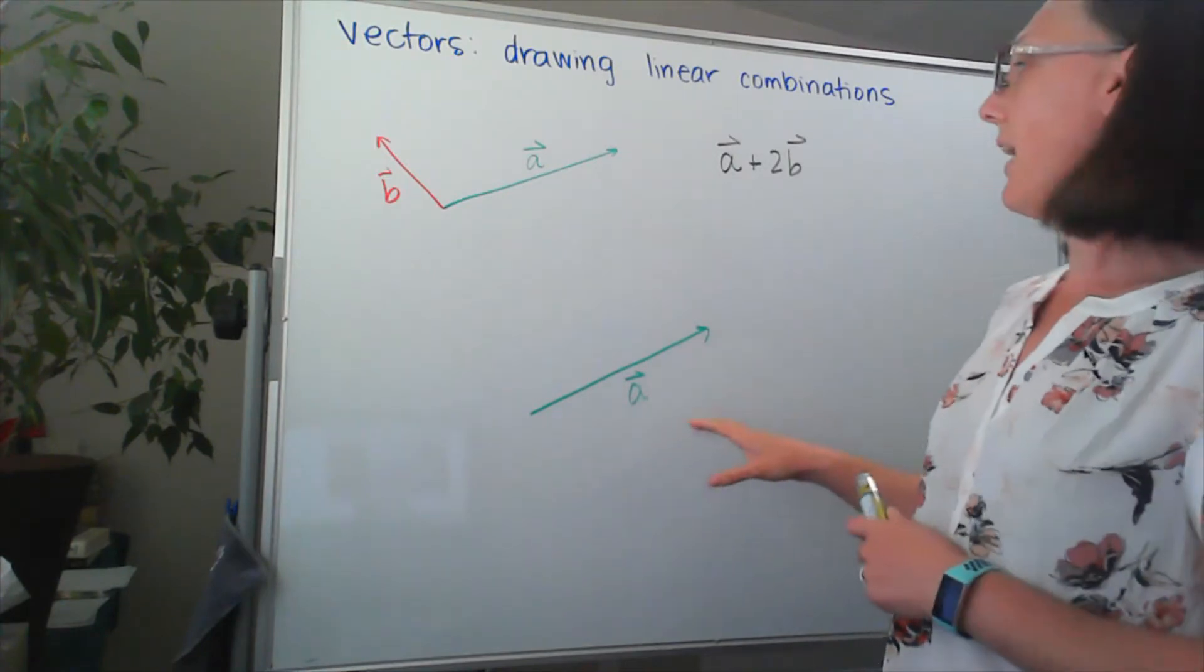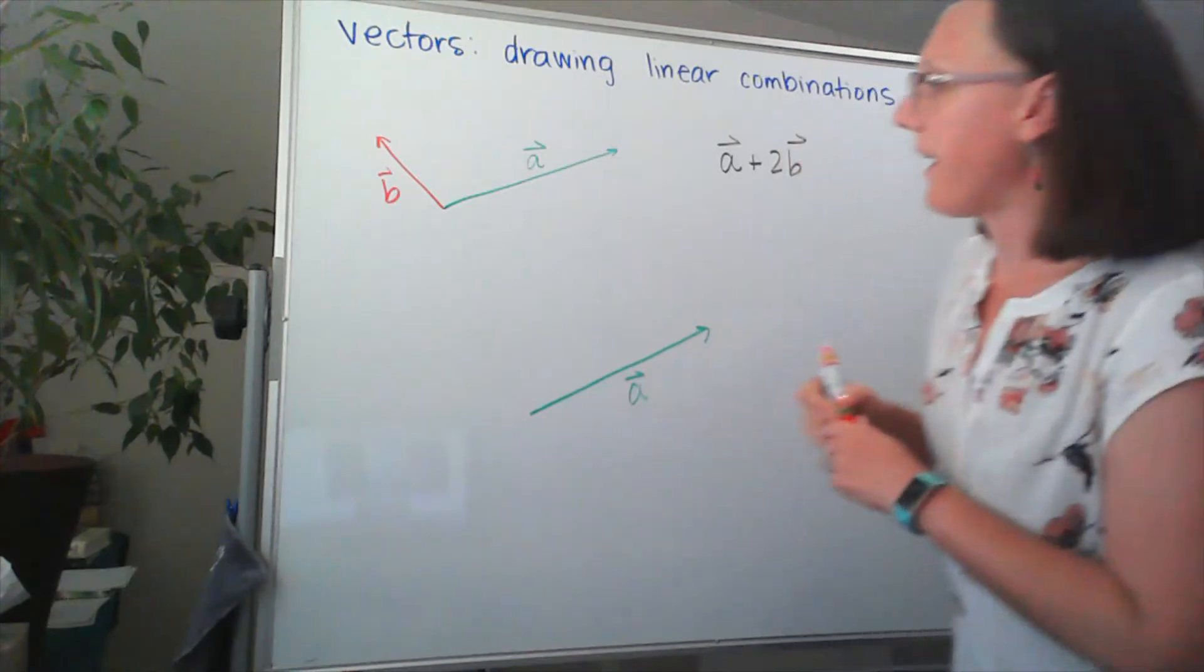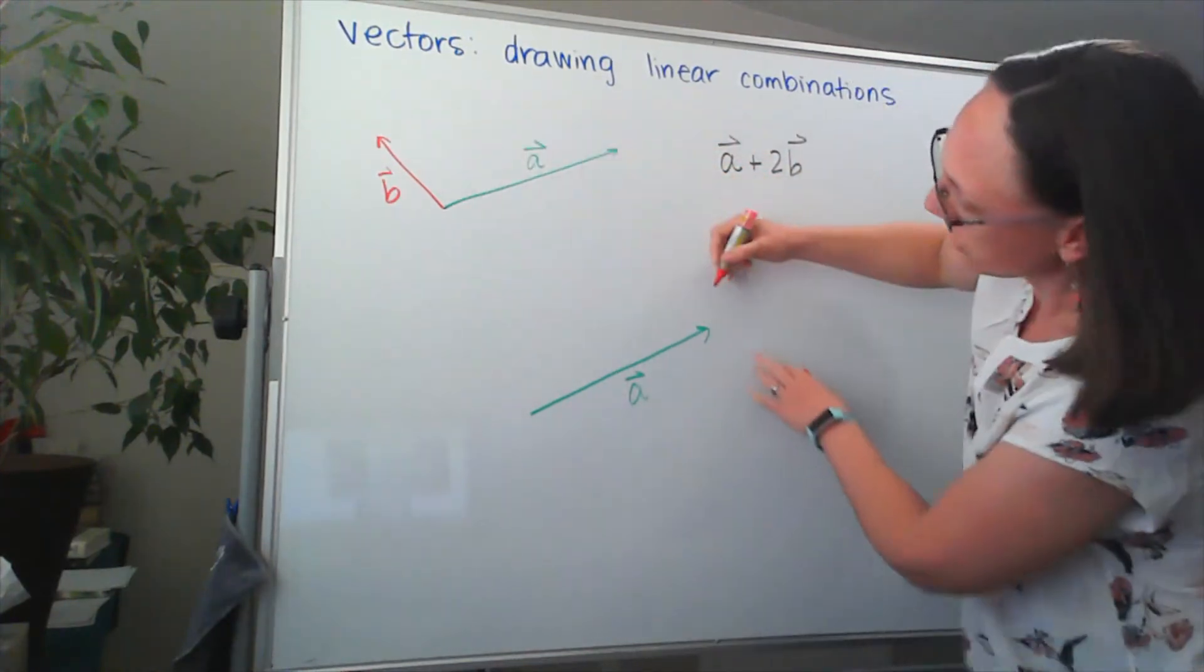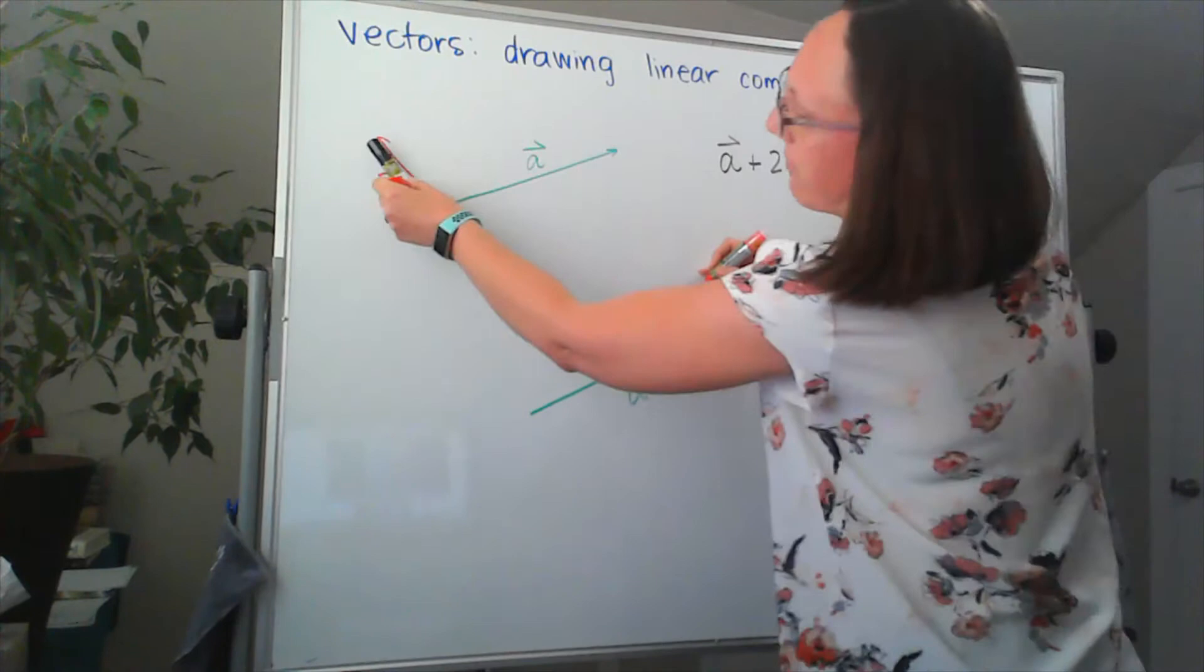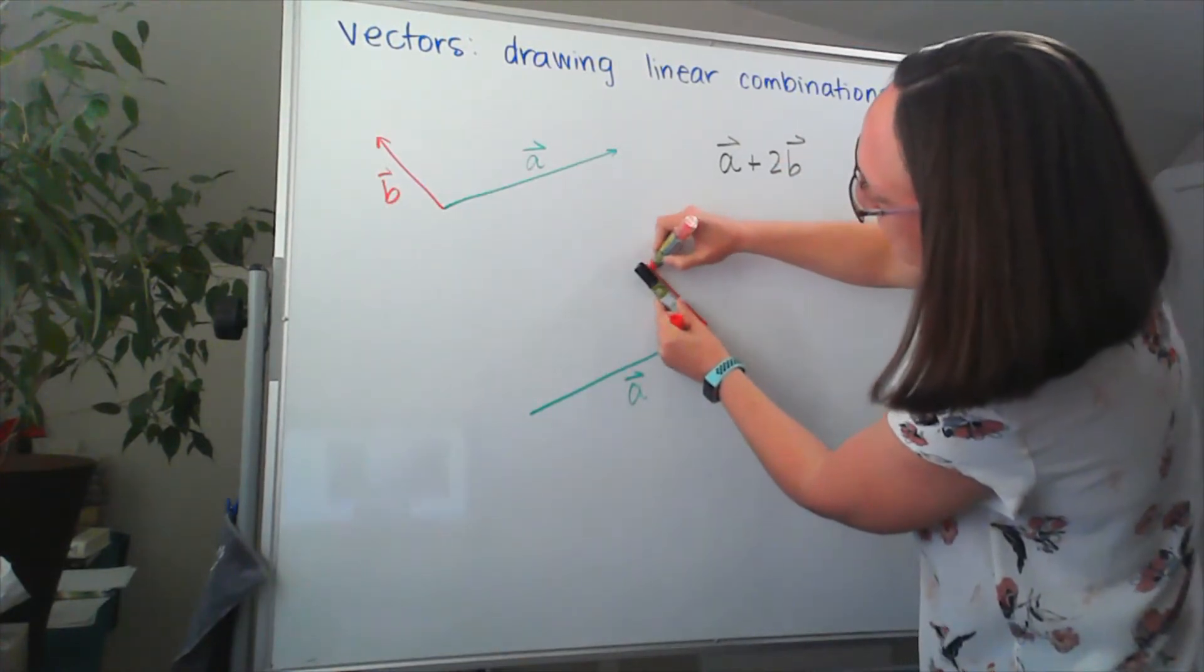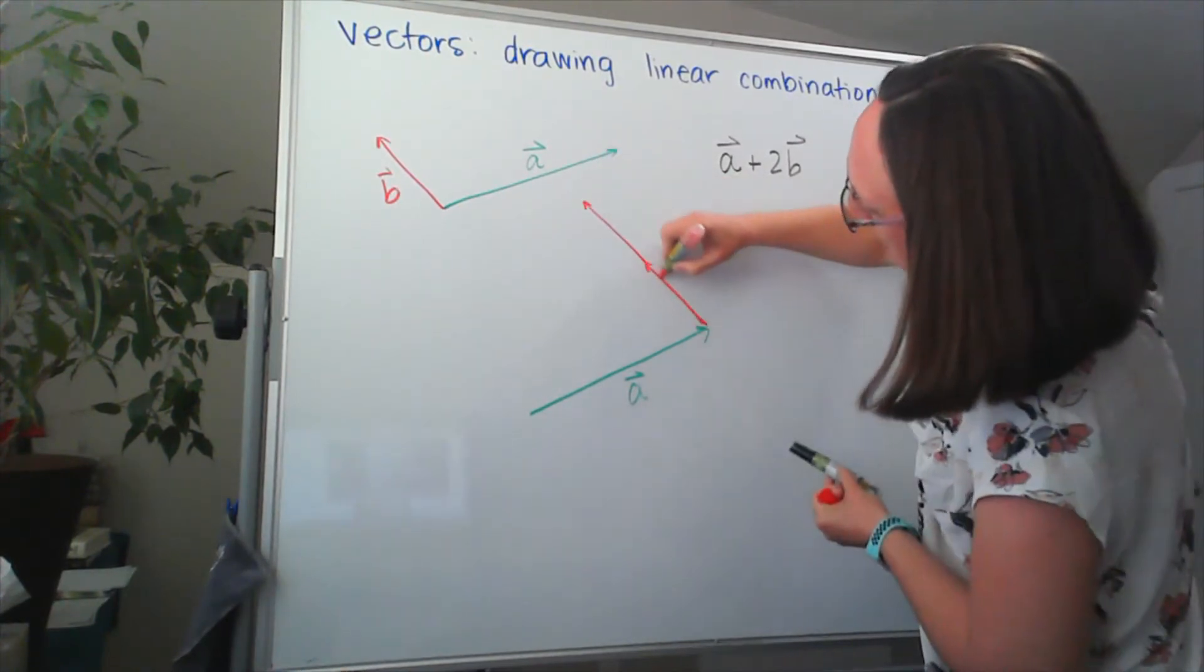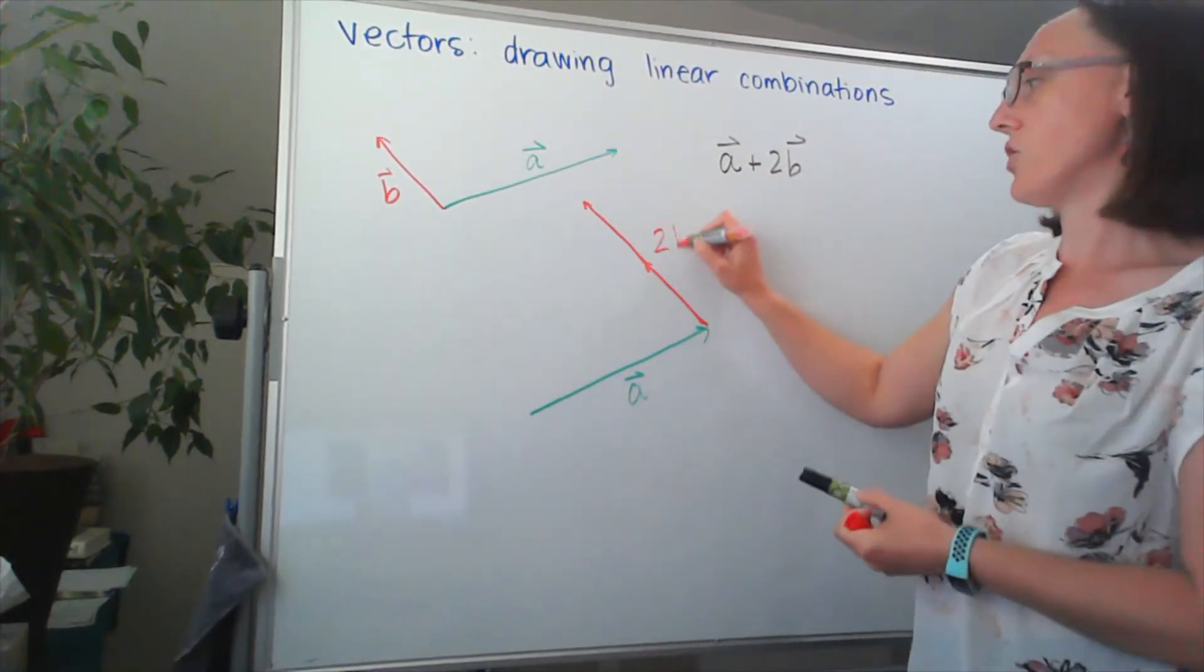And now to that vector A, I'm going to add two copies of B. So I'm going to add B, which goes, use my pen again for my length. So there's one copy of B and two copies of B. So there's my 2B.